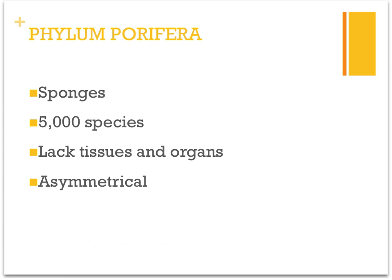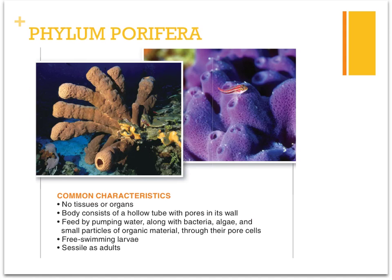Finally, Phylum Porifera — the last phylum you need to know for your exam. These are your sponges, with about 5,000 species. This is the only phylum that lacks tissues and organs. They are also asymmetrical — not bilaterally or radially symmetrical; they have no symmetry. Their name comes from the pores in their body, which are clearly visible. They are sessile as adults, but their larvae and juvenile forms are free-swimming.